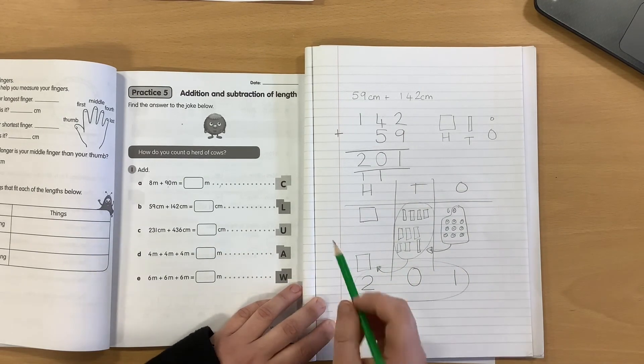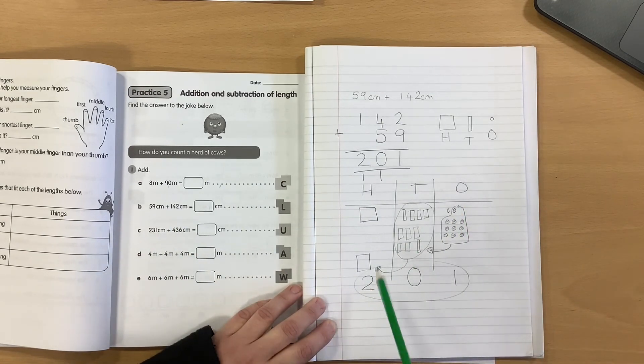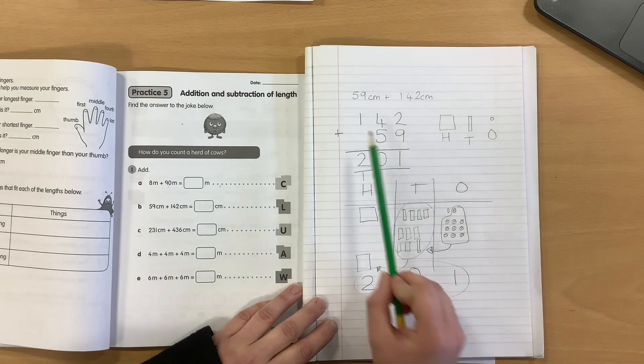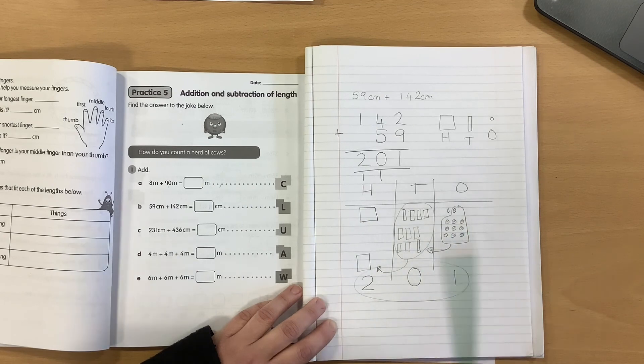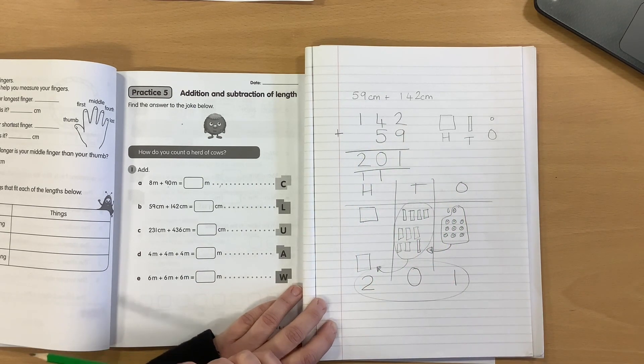Remember, if you are struggling when it comes to addition, you don't have to use this method for just regrouping. You could use it even when regrouping is not required. But always start by drawing your biggest number and then drawing in the added hundreds, tens, and ones. Good luck!